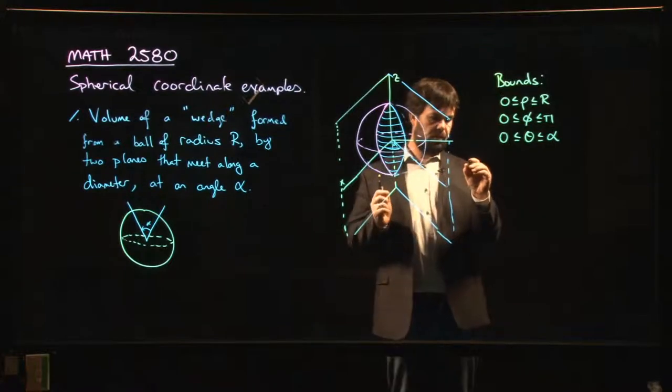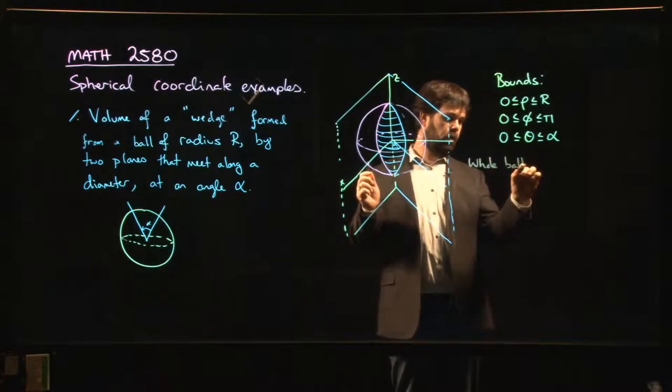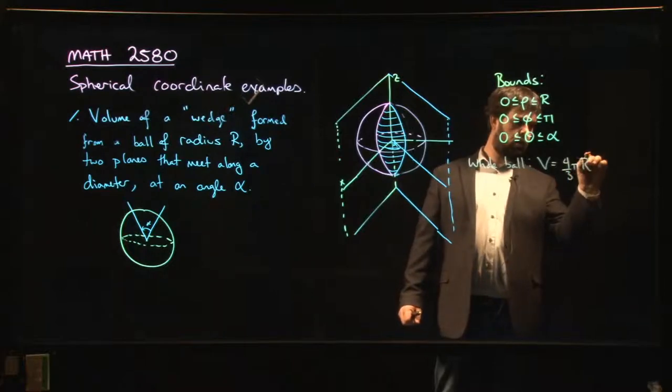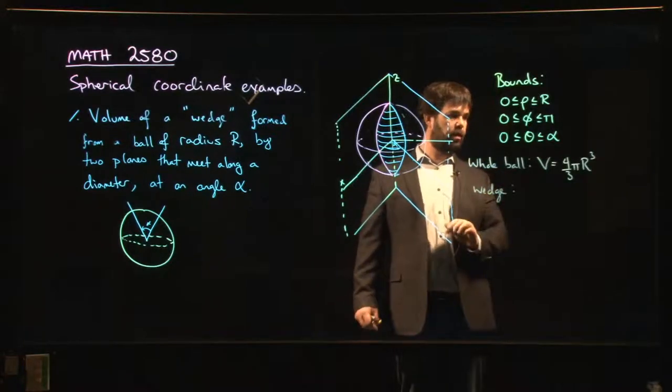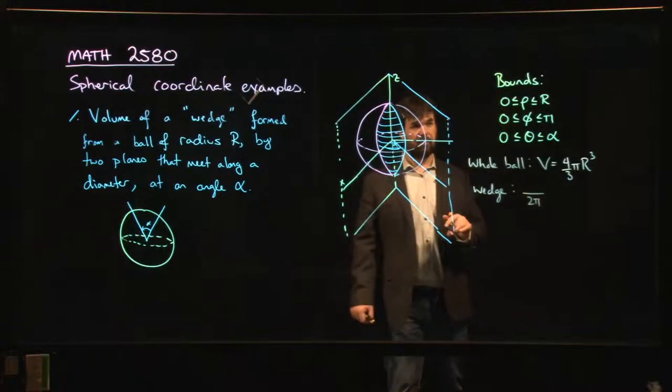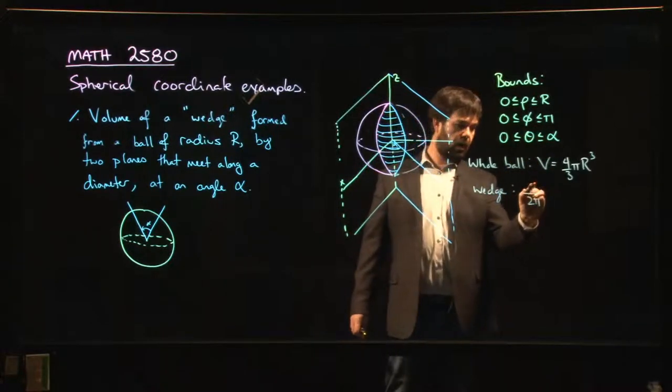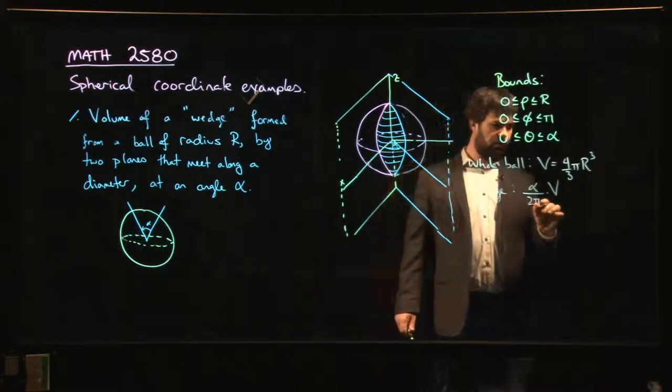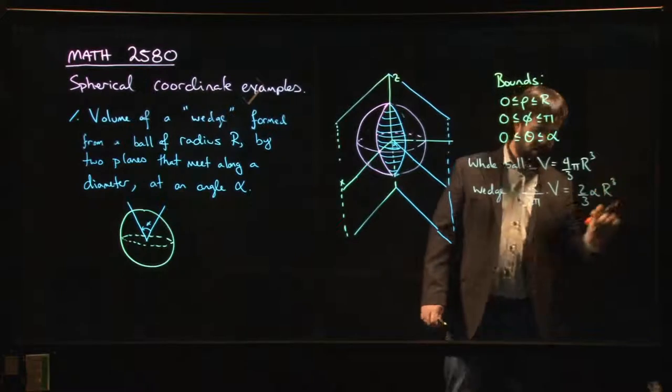Actually, we can do this without any calculus. We'll set it up anyway. We'll set up the integral. But let's just notice that if we wanted the whole ball, the volume is going to be, well, we know that it's 4/3 pi R cubed. And so for our wedge, well, what portion of the ball are we taking? The entire ball spans an angle of 2 pi as far as the theta variable is concerned. And so the fraction of the ball that we're taking is the angle that we're using over 2 pi. So it's this ratio times V. That's not so bad. So it is going to be equal to 2/3 alpha R cubed. That should be the answer.